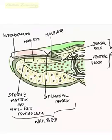As these cells proceed upwards and reach the nail plate, due to resistance from the nail plate they become elongated and get incorporated into the nail plate. The dorsal roof mainly contains cells that impart shine to the nail. The sterile matrix contributes to 10 percent of nail plate production and also gives strength and thickness to the nail plate.